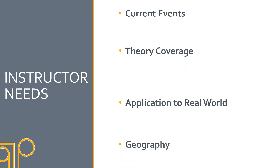We talked about course outcomes; let's talk about instructor needs. These are the types of things you're going to be discussing in your conversations and questioning strategy. First is current events — with everything changing so rapidly in our world today, keeping current and discussing current events is a very important part of this course. In addition to that, theory coverage is a very central course outcome, so instructors need that theory content and coverage.